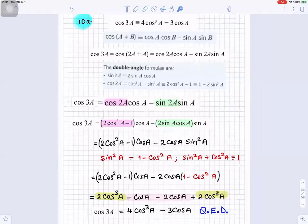So, we're going to use this formula at the top, cosa plus b, and we're going to use this double angle formula. We want to write cos3a as 2a plus a. Cos2a plus a is 3a, 2a plus a.